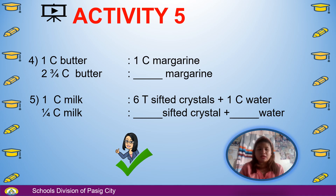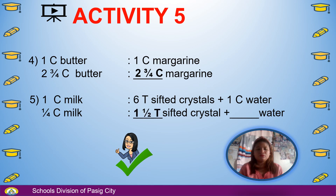Number 4: 1 cup of butter equals 1 cup of margarine, so 2 and three-fourths cup of butter equals blank margarine — answer: 2 and three-fourths cup of margarine. Number 5: 1 cup of milk equals 6 tablespoons of sifted crystals plus 1 cup of water, so one-fourth cup of milk equals blank sifted crystals plus blank water — answer: 1 and one-half tablespoons of sifted crystals plus one-fourth cup of water.